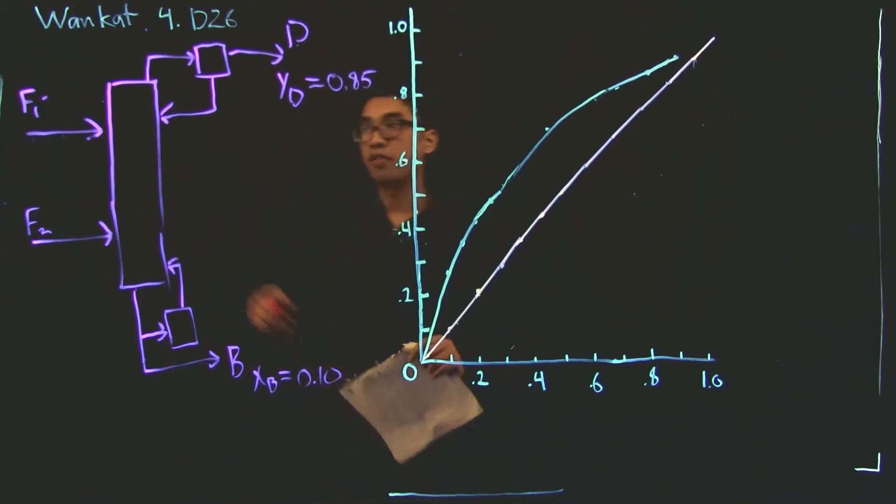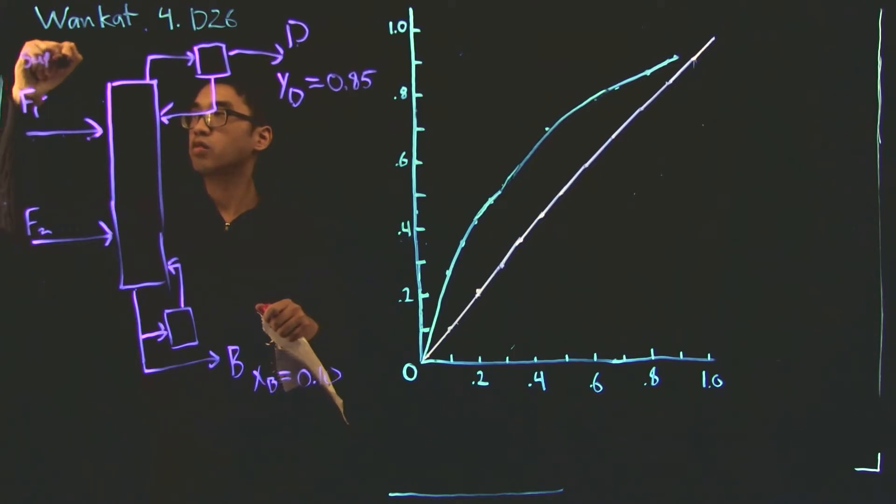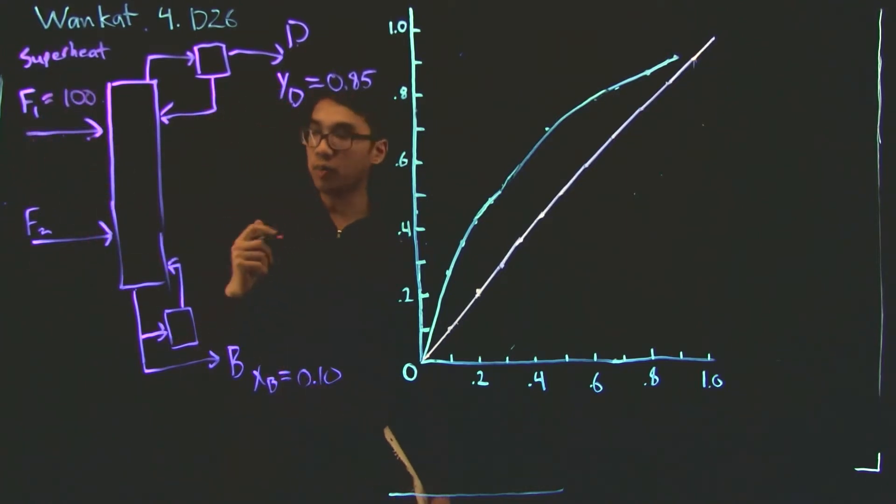And this has a composition of 10% acetone. Let's talk about the feeds. The first feed we have is superheated vapor at a flow rate of 100 moles per minute. And the composition is 50% acetone. We know that for every 20 moles of vapor, we require one mole of liquid to evaporate in order to lower the temperature to the saturation temperature. Next, we have a second feed, which is a saturated liquid at 150 moles per minute. And the composition is 35% acetone.